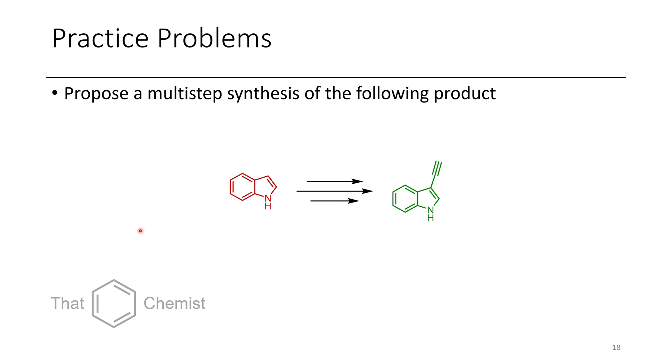Now for this lecture, I'd like to assign a few practice problems. In this first example, I want you to start with indole and convert it to 3-alkynyl indole. And it's worth noting that indole is a really good nucleophile, and if you were to add an acylating agent such as Vilsmeier, that's going to add to the 3 position over the 2 position in most cases.